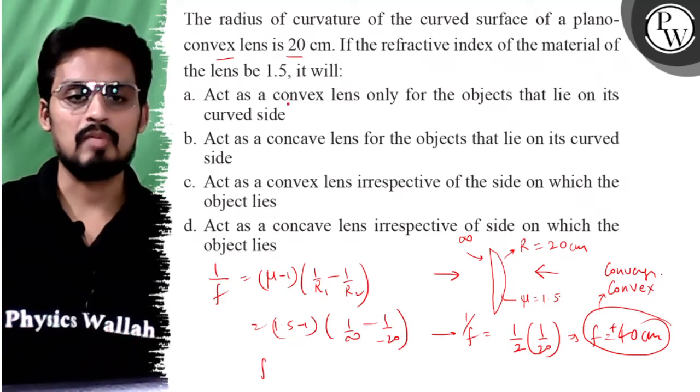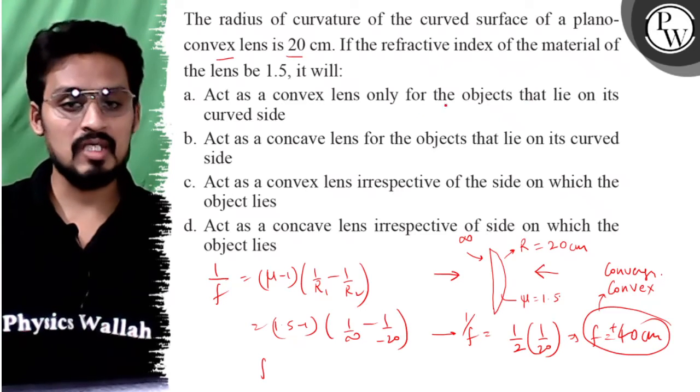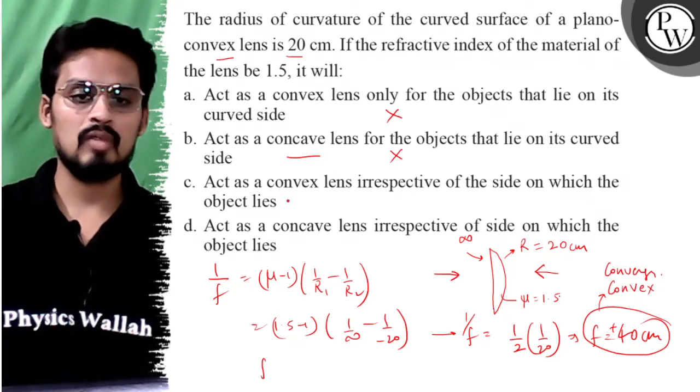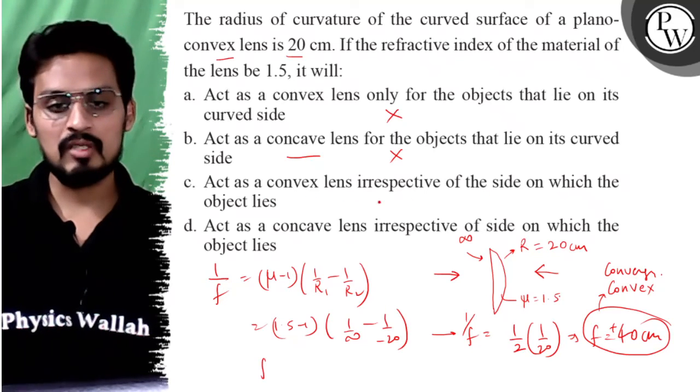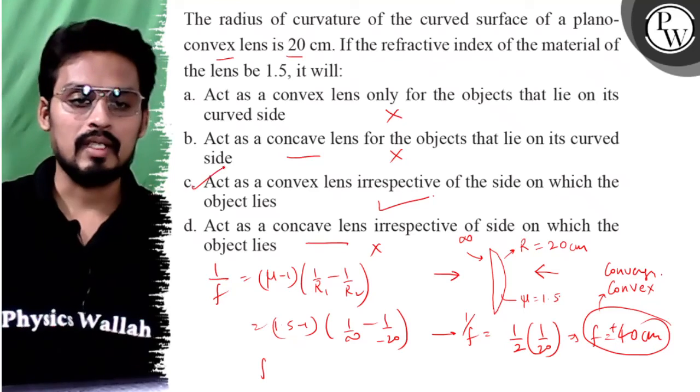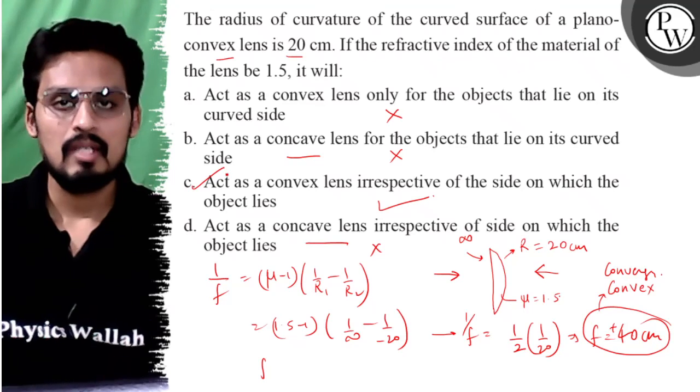Now we have options: act as a convex lens only for the objects that lie on the curved side - it is not, it's on two sides. Act as a concave lens - this is correct. Act as a convex lens irrespective of the side on which the object lies. Act as a concave lens - this is correct. The correct answer is option C. Thank you.